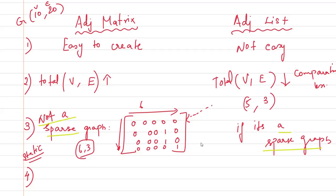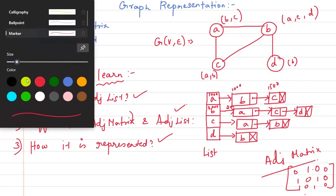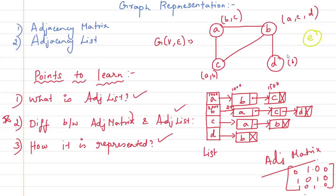The next important point is: adjacency list is easy to update. Say for example you have a graph — you can create a new node and add a link at the end of the list dynamically. Updating the graph in adjacency list is super easy.